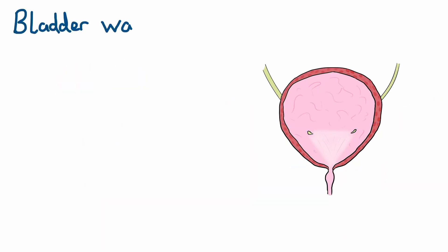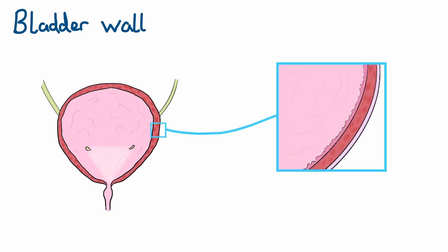Let's have a look at the bladder wall. The inner lining of the bladder is the mucosal layer, which is made up of transitional epithelium, a type of epithelium designed to change shape in response to stretching. External to the mucosal layer is the detrusor muscle. This is a smooth muscle with fibers orientated in multiple planes to allow it to maintain its structure whilst fully stretched. The function of the detrusor muscle is to contract and force urine out through the urethra during urination. The superior and posterior wall of the bladder are also covered with a layer of visceral peritoneum.